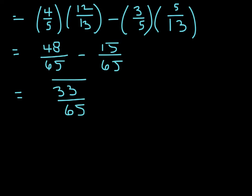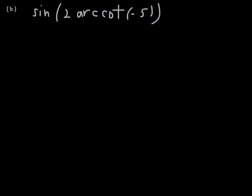That problem required two substitutions, two reference triangles in the correct quadrants, and the difference identity for sine — an extra layer of complexity. Example six, part B: evaluate sine of (2 times arc cotangent of negative 5). Be careful about the substitution — let θ equal just arc cotangent of negative 5, not everything inside the parentheses.